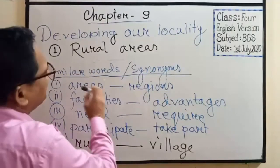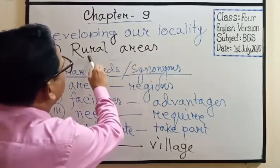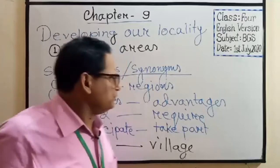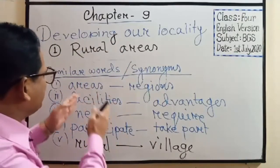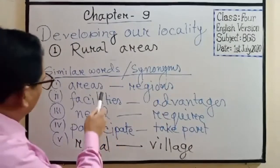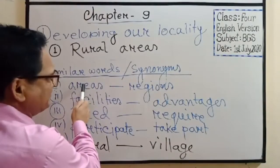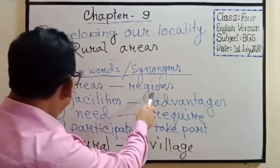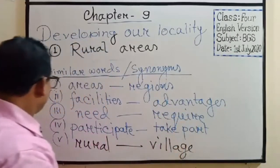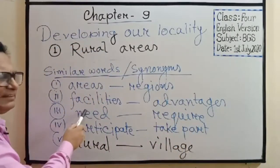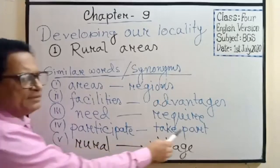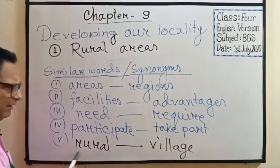Now I am going to describe developing our locality. Our lesson is about rural areas, that is village areas. I want to give you some similar words written on the board for your easy learning. Please follow the board. Number one: areas — regions. Number two: facilities — advantages. Number three: need — required. Participant — take part. Rural — village.